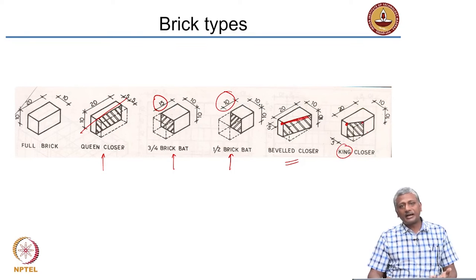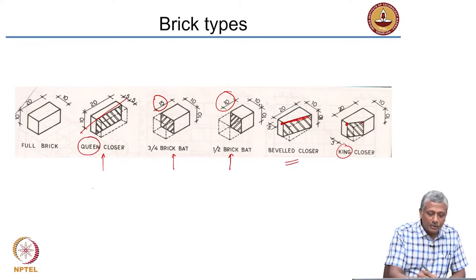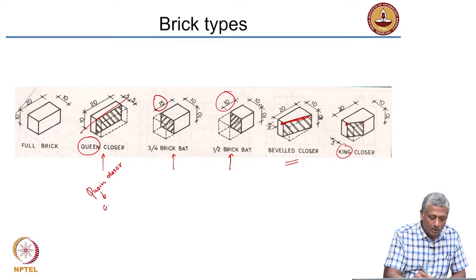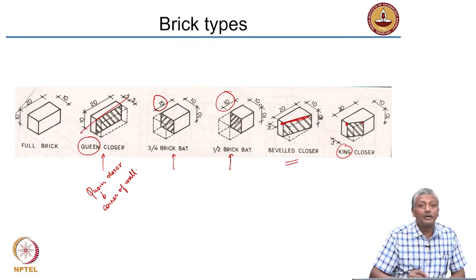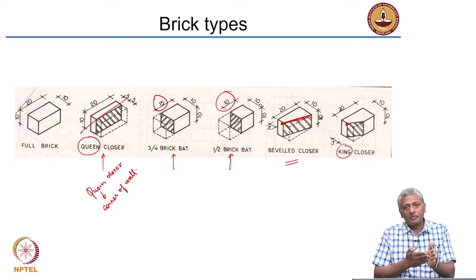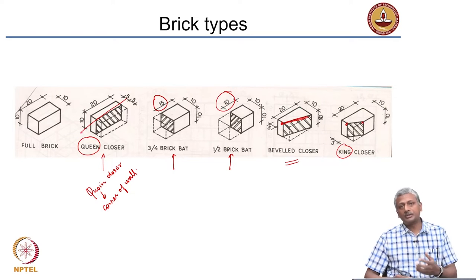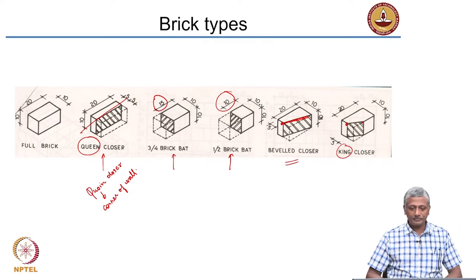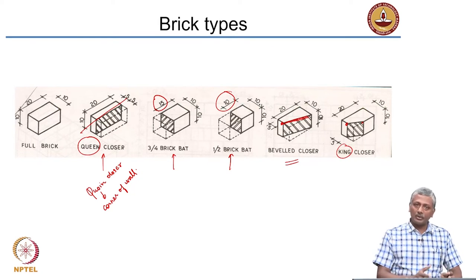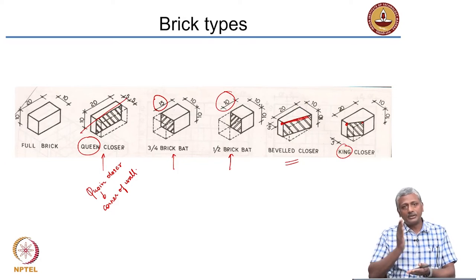It depends on the kind of requirement your wall has. Sometimes to end the corners you need special bricks. The queen closer is also known as the coin closer — a coin being a corner of the wall. For a wall to end and turn in another direction, you need to close it by providing bricks in an arrangement that allows the wall to turn. These special bricks can be molded or shaped by the mason using a trowel on site.